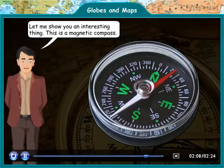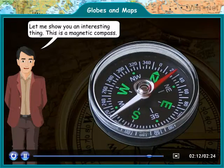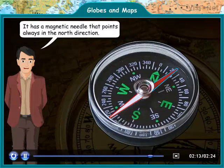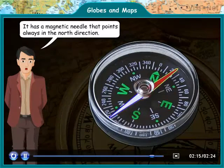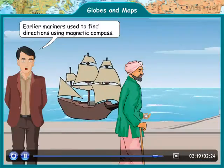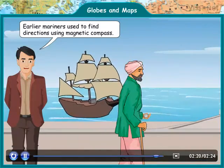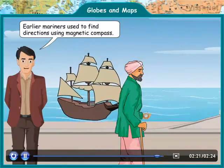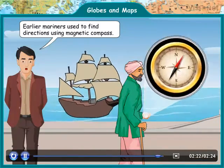Let me show you an interesting thing. This is a magnetic compass. It has a magnetic needle that points always in the north direction. Earlier, mariners used to find directions using a magnetic compass.